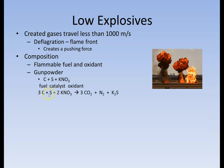In gunpowder, three moles of carbon, one mole of sulfur, and two moles of potassium nitrate react to produce three moles of carbon dioxide and another mole of nitrogen gas. We start off with all solids that take up almost no space. For each reaction, we generate four moles of gas, which take up approximately 10,000 times the amount of space. So this quick reaction in gunpowder creates an expanding gas that is 40,000 times the volume of the original solids.